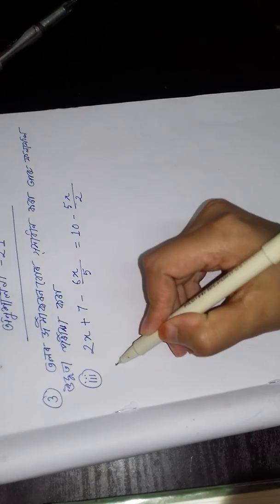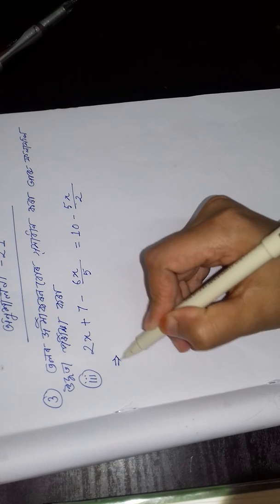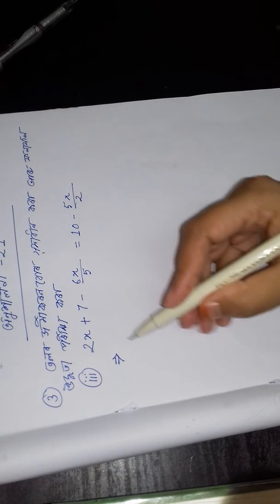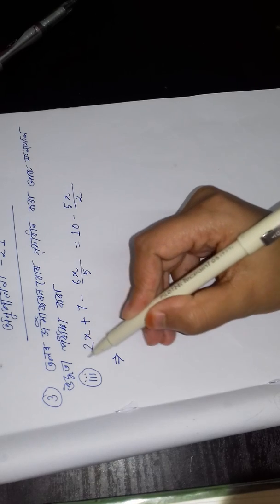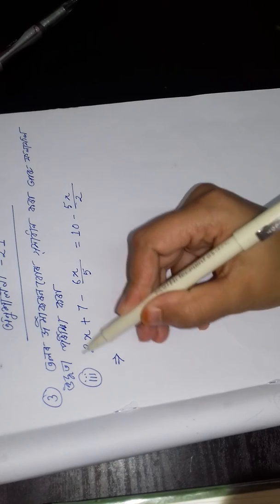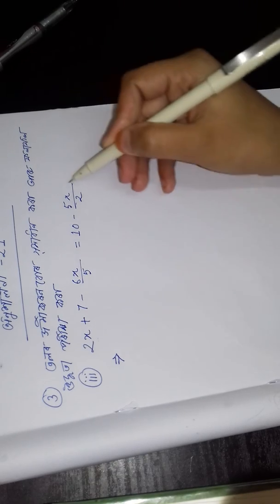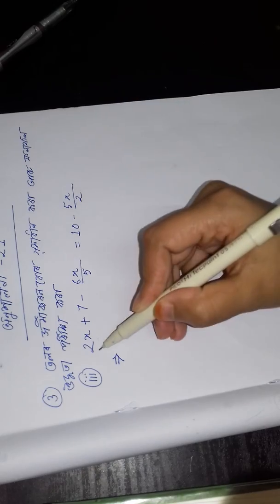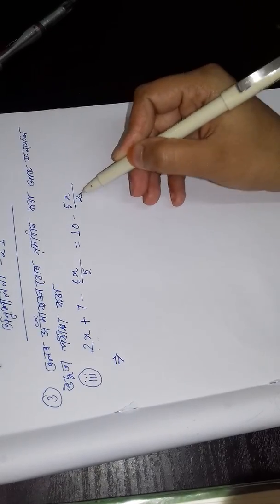When I tell you how to make money, I'm gonna give you 2x, 6x divided by 5, 5x divided by 2, 4x.